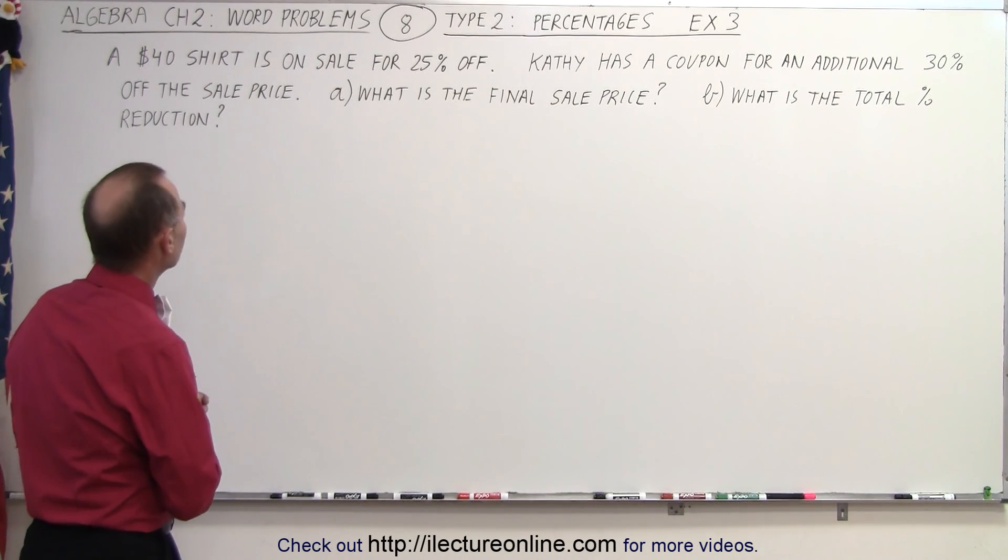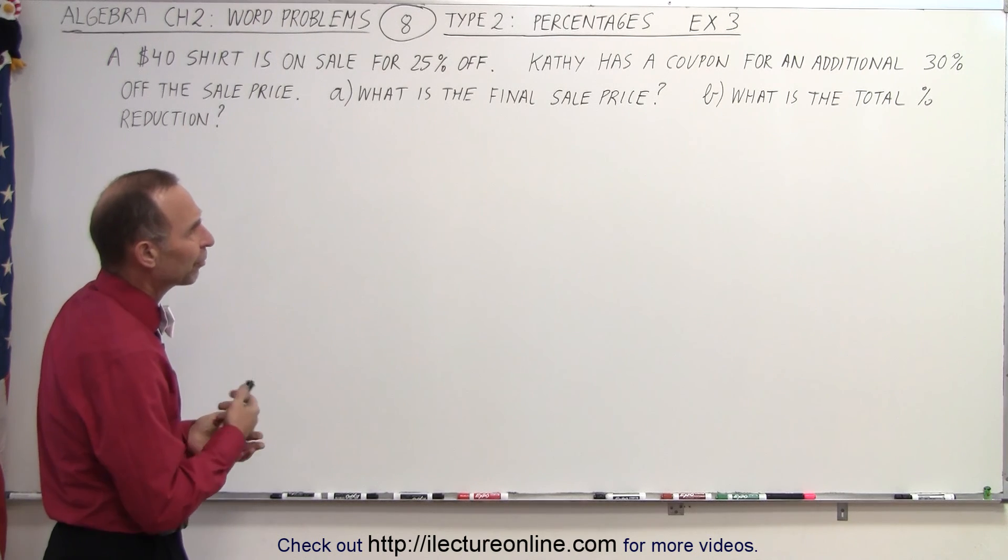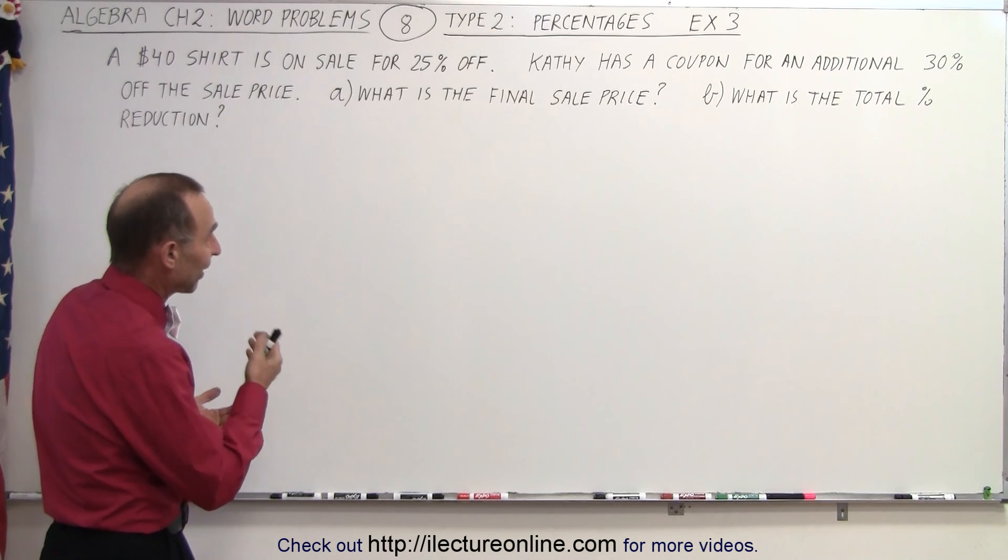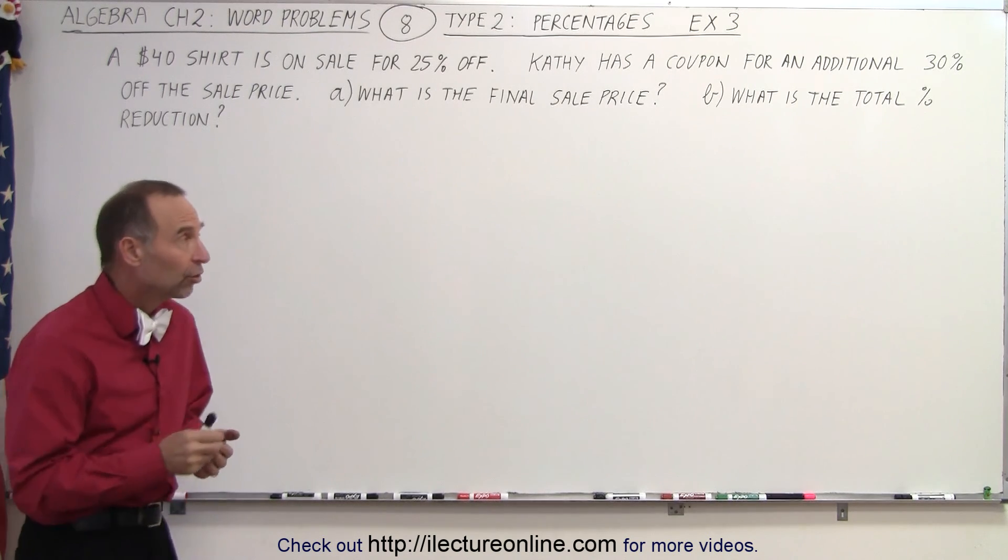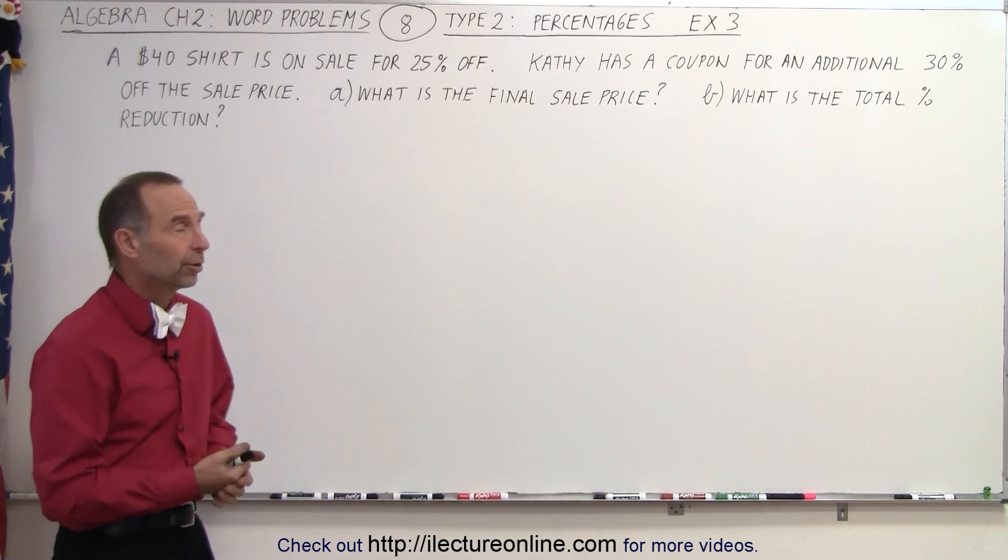The problem reads as follows. A $40 shirt is on sale for 25% off. Kathy has a coupon for an additional 30% off the sale price. Then we ask, what is the final sale price? And what is the total percentage reduction of the original price?